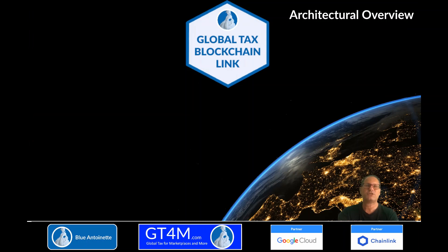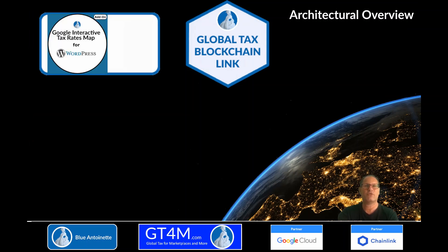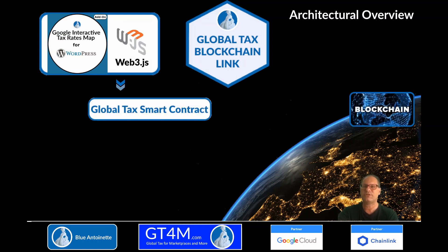From an architectural perspective, the solution consists of several components. The Google Interactive Tax Rates Map is a WordPress plugin that displays the map and the tax rates on a WordPress site. It utilizes Web3GS, an Ethereum JavaScript API, to request and receive the tax rates from the Global Tax smart contract.